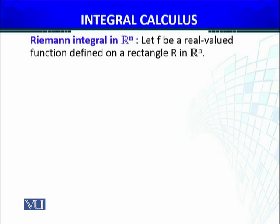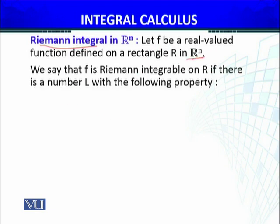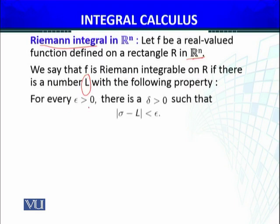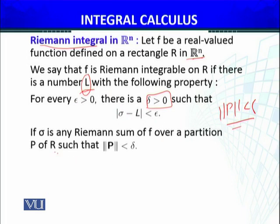We define the Riemann integral by using Riemann sums. Let f be a real valued function defined on a rectangle R in Euclidean space R^n. We say that f is Riemann integrable on R if there is a number, finite number L with the following property: for every epsilon greater than zero there exists a delta greater than zero such that sigma, the Riemann sum minus L is less than epsilon.